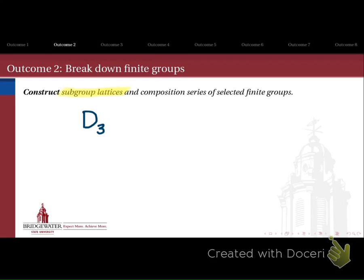The first way is to construct a subgroup lattice. For example, take the finite group D3, the dihedral group of the triangle — the symmetries that take an equilateral triangle into itself. The smallest possible subgroup inside D3 is just the trivial subgroup, but in between the trivial subgroup and D3 itself are other subgroups: one of order 3, one of order 2, both cyclic. We can visualize this subgroup structure as a little lattice ordered by inclusion.